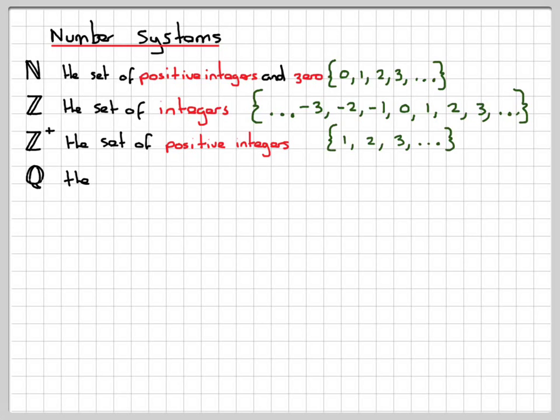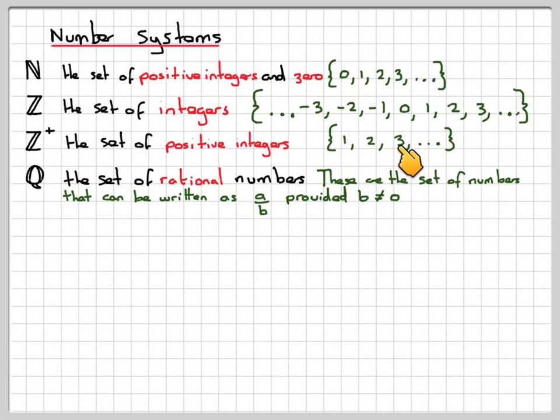And then the next set of numbers that we learn about is a set of rational numbers. Rational numbers are numbers which can be written as A over B, provided B is not equal to 0. The number 3 is also a rational number because that can be written as 3 divided by 1. So all positive integers, integers, and 0 are also rational numbers. So what we should have realized is that N is a subset of Z, and both N and Z are a subset of the set of rational numbers.